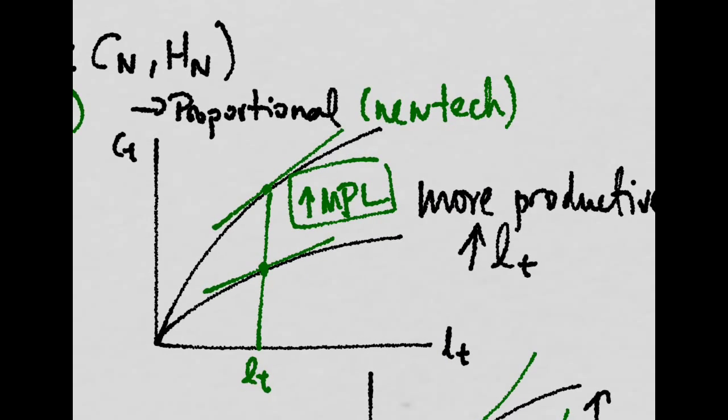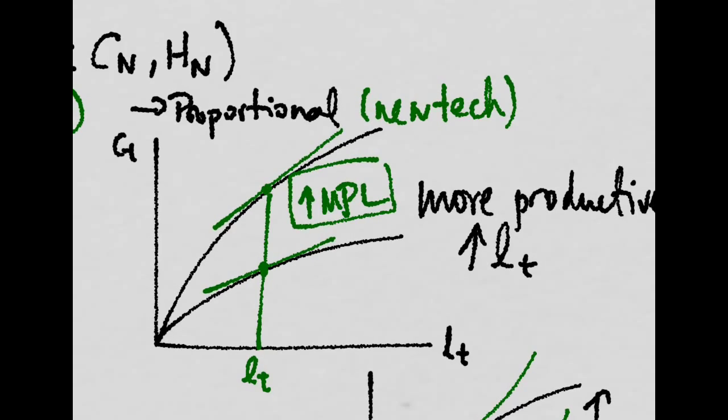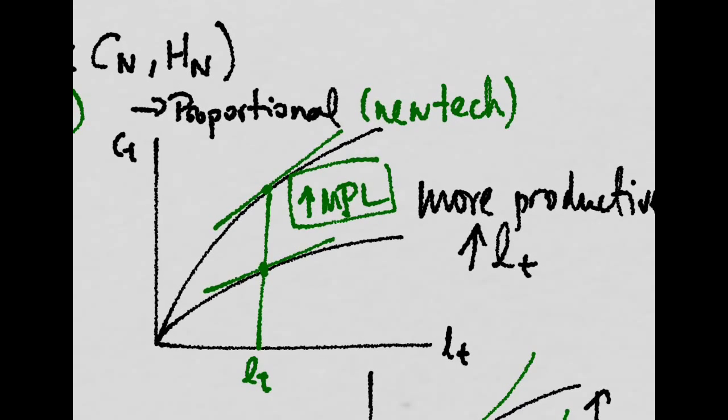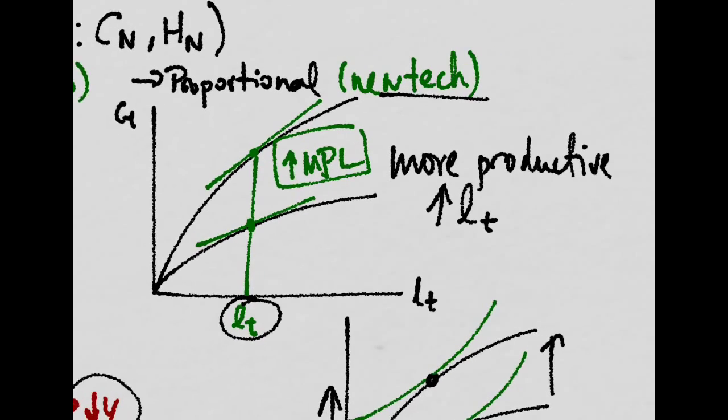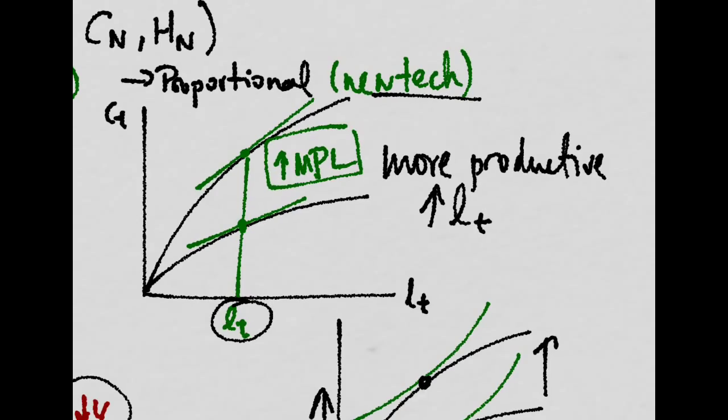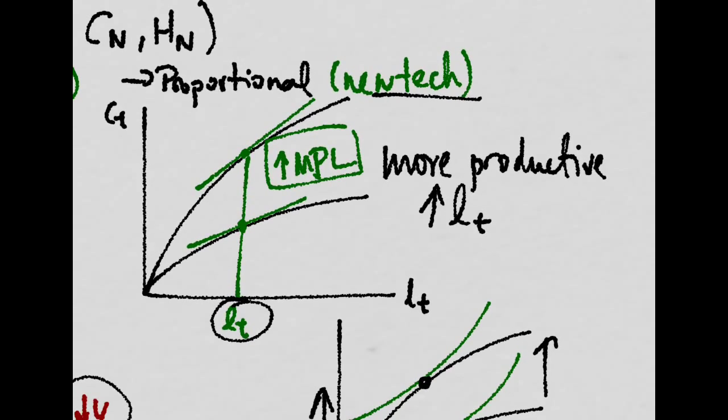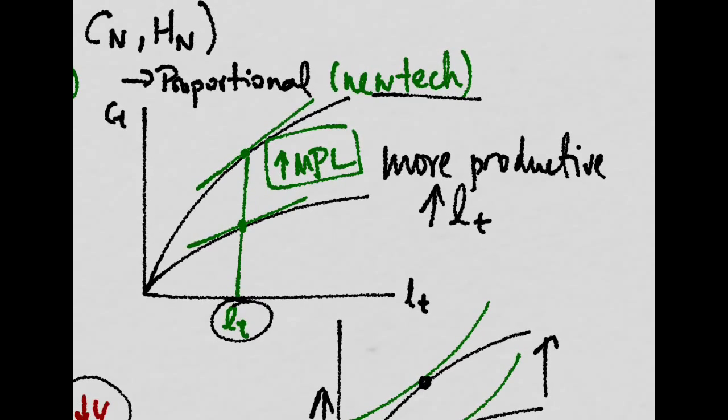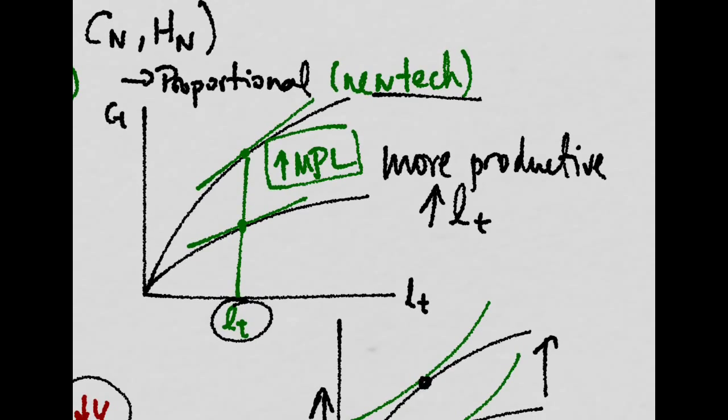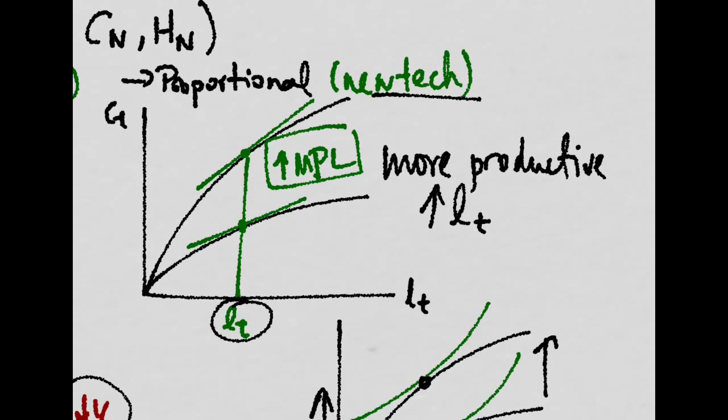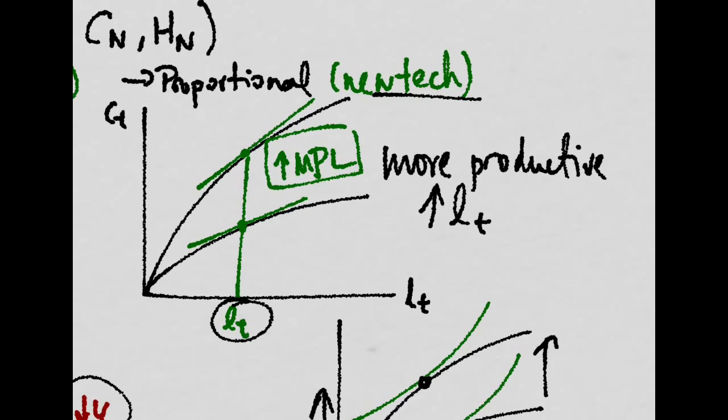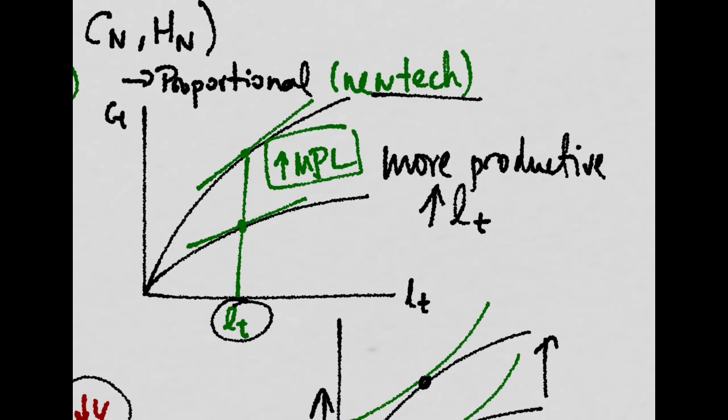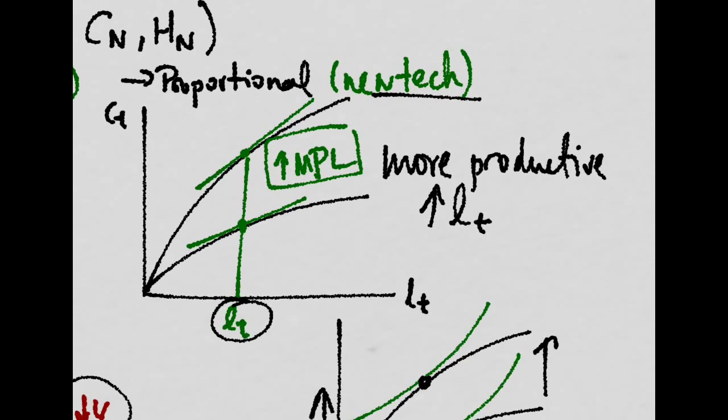Now, if there is a proportional shift, imagine new technology is discovered. For the same amount of labor, his MPL will be higher. The slope at that point will be higher. That means that he will be more productive, so he will have the incentive to increase the amount of work to get more consumption out of it.